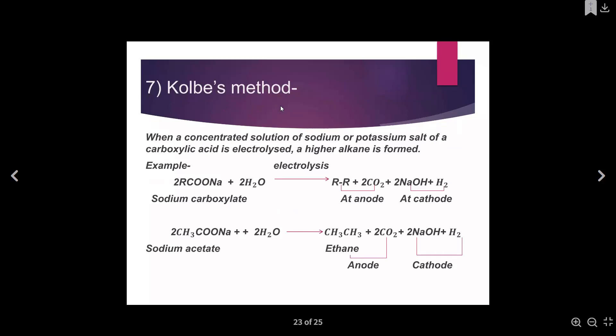We also have Kolbe's electrolytic method. Kolbe's method is when a concentrated solution of sodium or potassium salt of carboxylic acid is electrolyzed. It is a process where alkanes are produced through electrolysis. For example, two molecules of sodium ethanoate plus water produce ethane, plus two molecules of carbon dioxide, plus two molecules of sodium hydroxide, plus hydrogen at the cathode. Ethane is usually produced at the anode. Kolbe's method is an electrolytic method and alkane family members are produced at the anode.